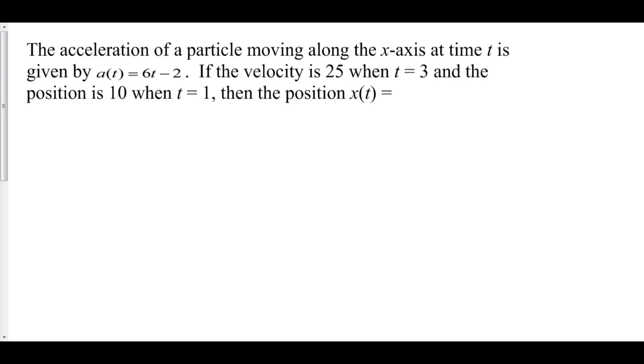Well, we are given the very bottom of our ladder, our acceleration function, and that's given by 6t minus 2. If I want to find the velocity function at any time t, all I have to do is take the antiderivative of acceleration.